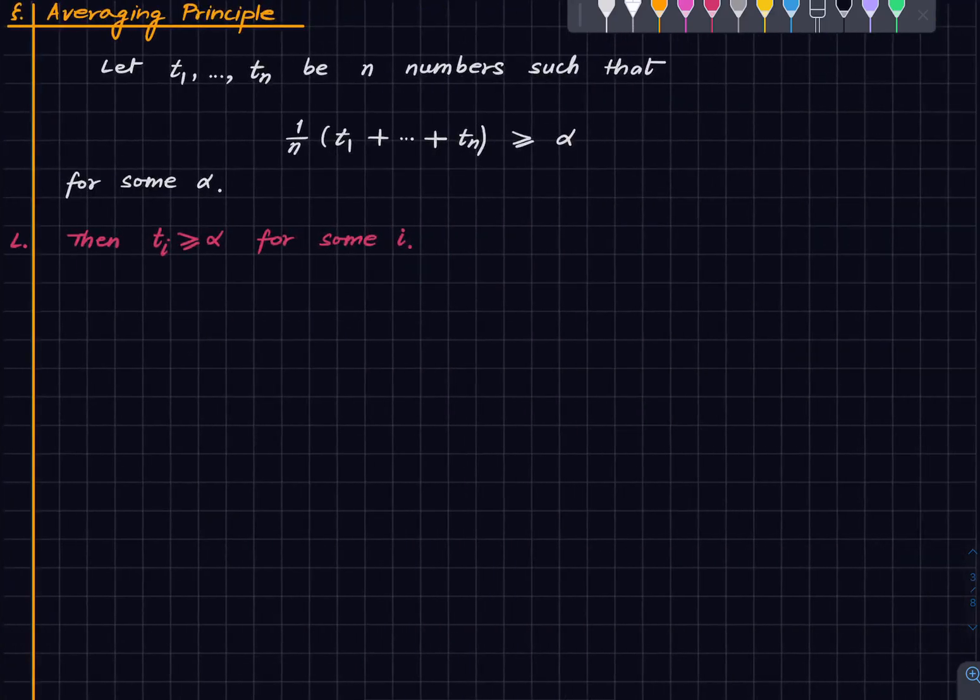And here is a very simple fact which we will refer to as the averaging principle. It says that suppose we have n numbers t_1 up to t_n such that their average exceeds alpha or is at least alpha, where alpha is some real number.